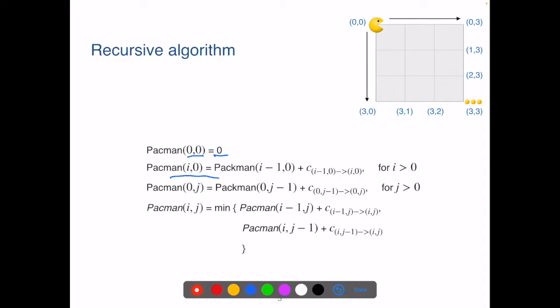When the destination is on the left edge, the cost of getting there is the cost of getting to the location above it, plus the cost of the link connecting the position (i-1,0) and (i,0).